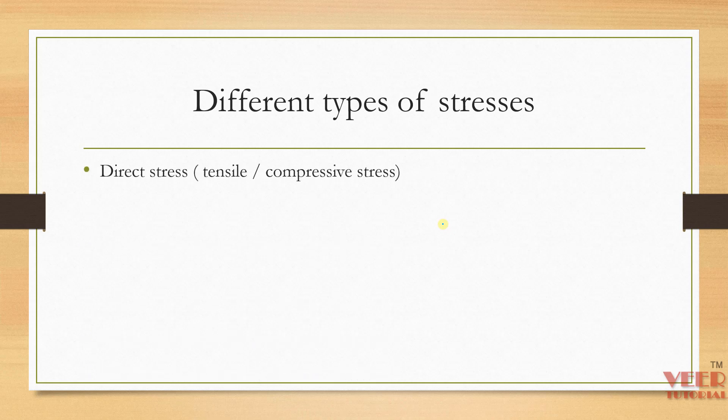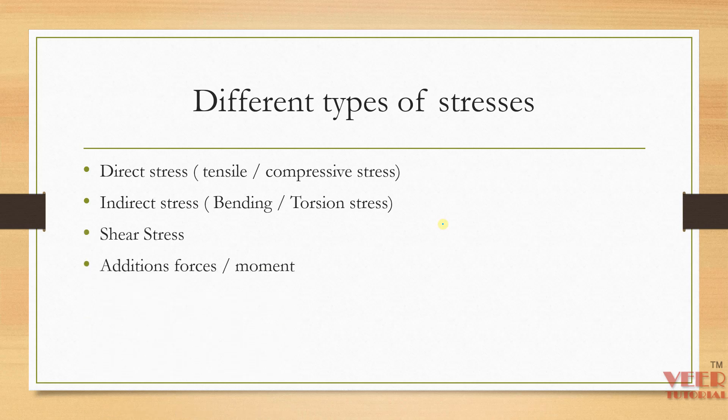We can divide stresses into direct stresses — tensile or compressive — and indirect stresses such as bending or torsion. We also have shear stresses and additional forces or moments. These can act as separate forces or as a combination of multiple stresses. Because of these multiple stresses, we need a theory that combines them all and gives a single stress value to compare against the failure criterion of the material.